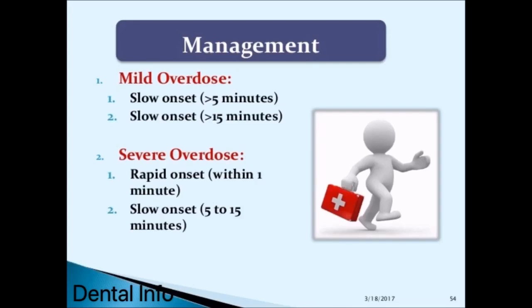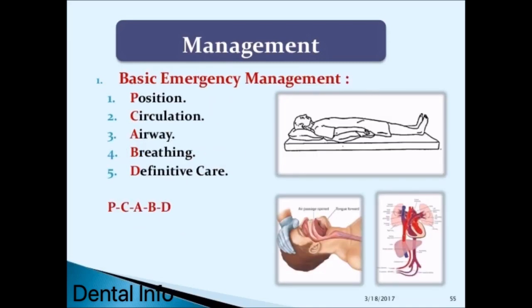Management of overdose is classified by severity. Mild overdose: slow onset greater than 5 minutes or slow onset greater than 15 minutes. Severe overdose: rapid onset within 1 minute, or slow onset 5 to 15 minutes. Basic emergency management follows P (position), C (circulation), A (airway), B (breathing), and D (definitive care)—PCABD.